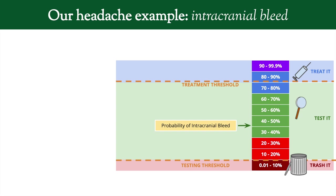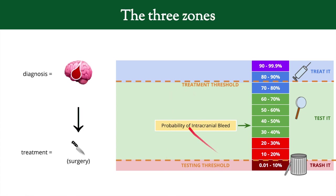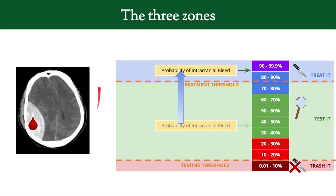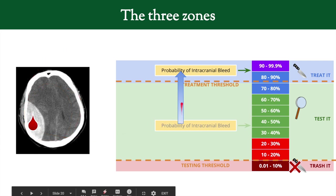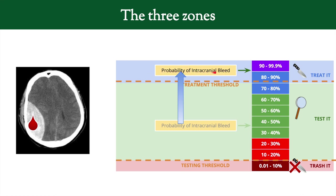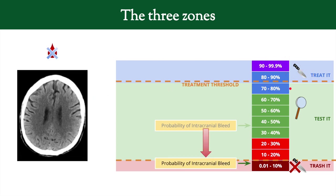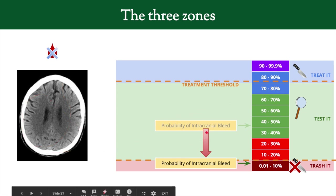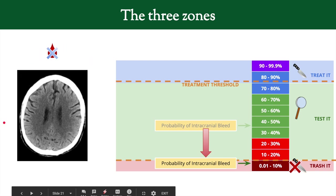Now let's look at a headache example. You'll notice the thresholds are set a little lower here. The diagnosis is bleeding on the brain and the treatment is surgery. If the patient gets a CT scan showing bleeding in the brain, that pushes the probability of intracranial bleed very high — we can see it on the scan — so the patient is now in the treat zone and needs surgery. If the CT scan is normal with no blood, that pushes the probability down into the trash it zone, and you decide against surgery. Getting more information moves something from the zone of uncertainty up or down.